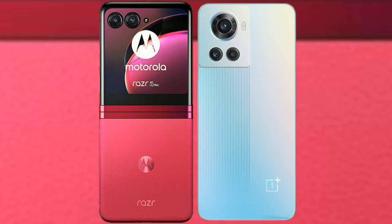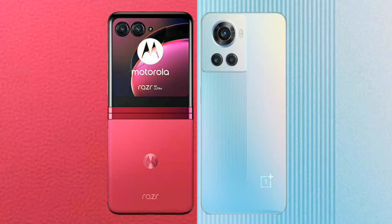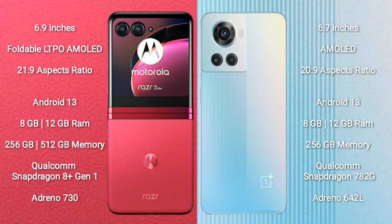I will compare the new Motorola Razr 40 Ultra with OnePlus K11. Motorola Razr 40 Ultra comes with a 6.9-inch foldable LTPO AMOLED display with an aspect ratio of 21:9. OnePlus K11 comes with a 6.7-inch AMOLED display and an aspect ratio of 22:9.